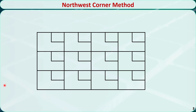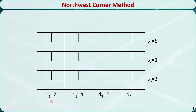Now let me explain the method step by step using an example. This is the transportation tableau. The total supply for the first row is 5, for the second row is 1, and so on. The total demand for the first column is 2, for the second column is 4, and so on.